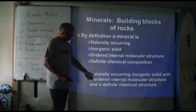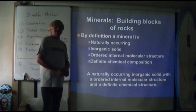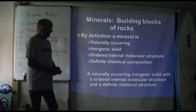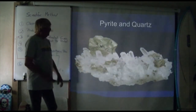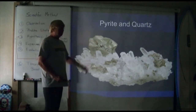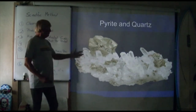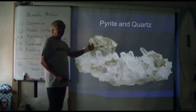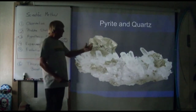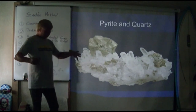To put all these things together: a mineral is a naturally occurring inorganic solid with an ordered internal molecular structure and a definite chemical structure — it has a crystal structure. Here are two examples. The gold-colored mineral is pyrite, also known as fool's gold. Pyrite's chemical formula is iron and sulfur. Sulfur is a yellow mineral and iron is a dark gray metal.